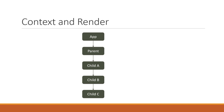The Parent component contains a count state which it renders in the JSX, and the same count value has to be rendered by the Child C component as well. So we create a new count context in the Parent component and provide the count value. We then use the useContext hook in Child C to consume that value — pretty straightforward usage of the context API.